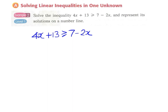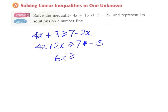Since we don't want a negative coefficient for the x term if possible, we choose to move minus 2x towards the left hand side, and then move plus 13 to the right hand side, giving 7 minus 13. This gives us 6x greater than or equal to minus 6, therefore x is greater than or equal to negative 1.